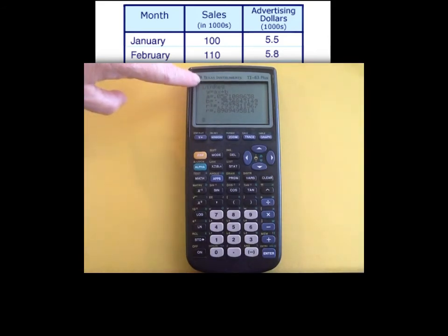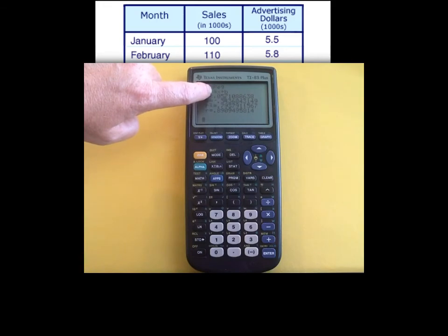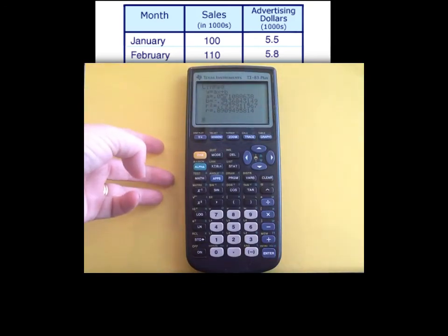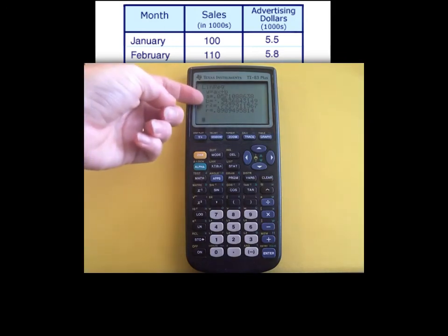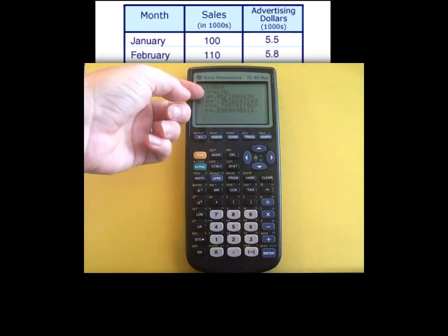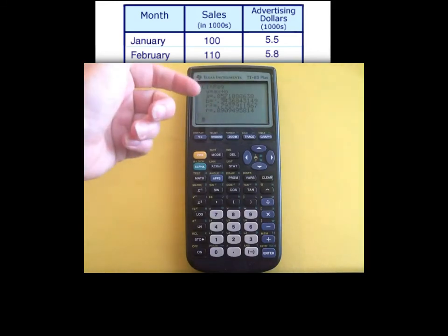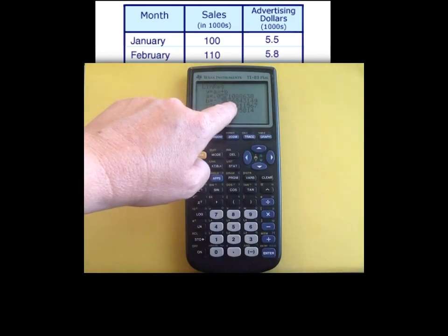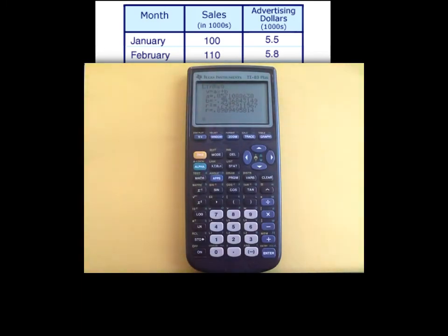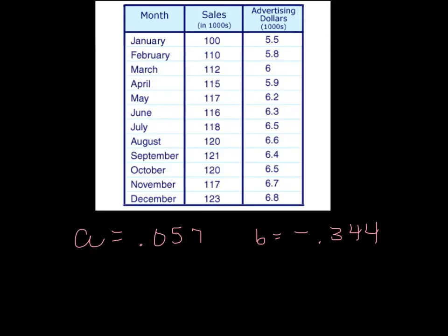So what I'm interested now for the regression line, there's that Y equals AX plus B I told you about. What they're giving you is what's the A value. They're giving you the number to put in for A and they're giving you the number to put in for B. Obviously you have a lot of decimal places. Let's just use three decimal places for this example. So my A value is 0.057. My B value is negative. Don't miss that negative. Negative 0.344 if I round to three decimal places.